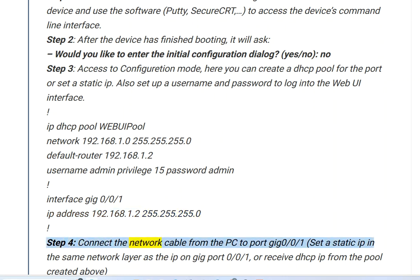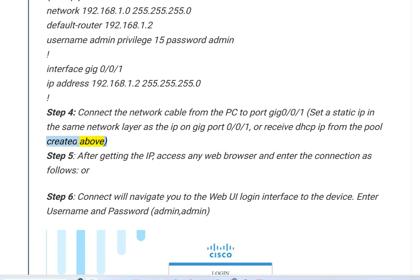Step 4. Connect the network cable from the PC to port Gig 0/0/1. Set a static IP in the same network range as the IP on Gig port 0/0/1, or receive a DHCP IP from the pool created above.